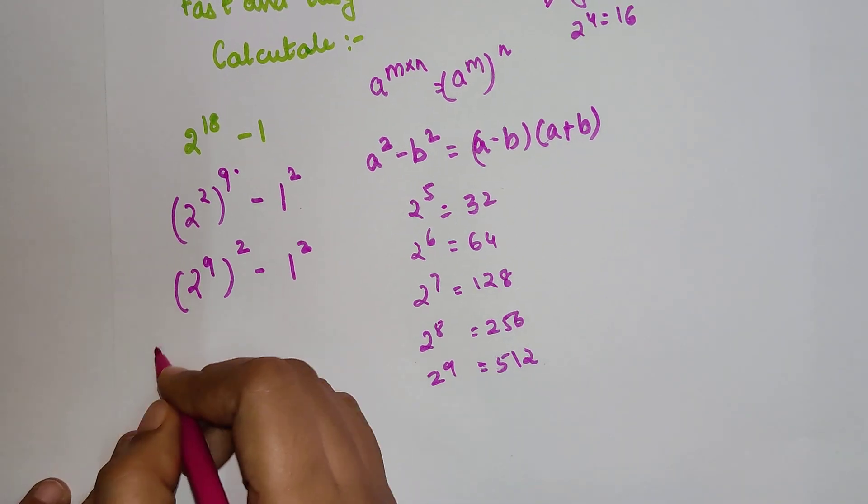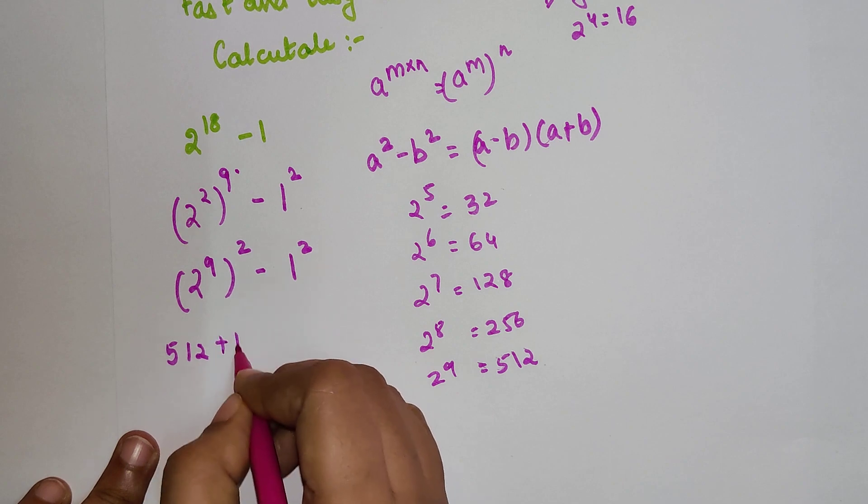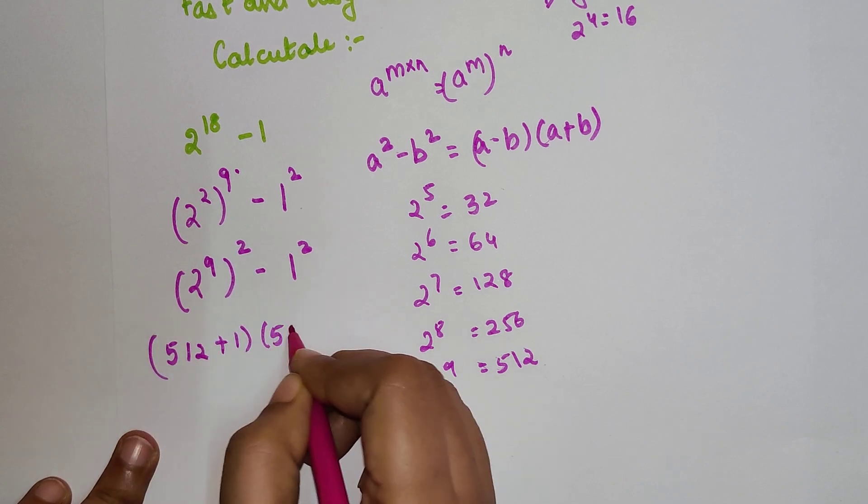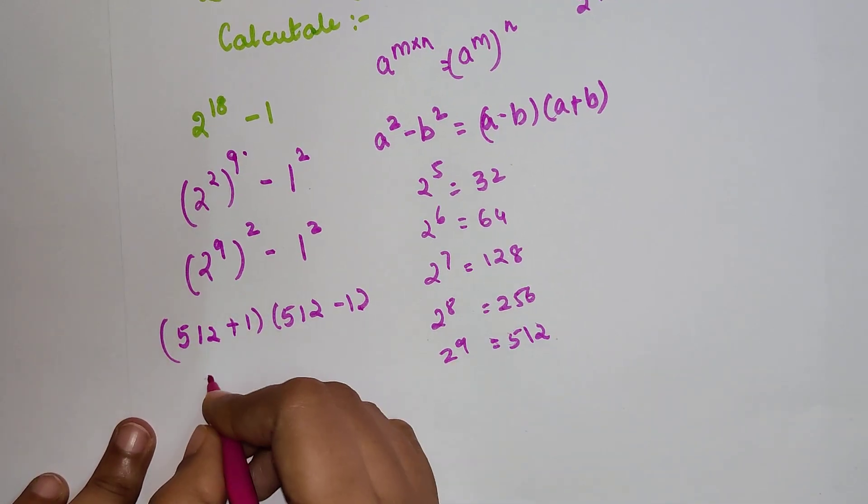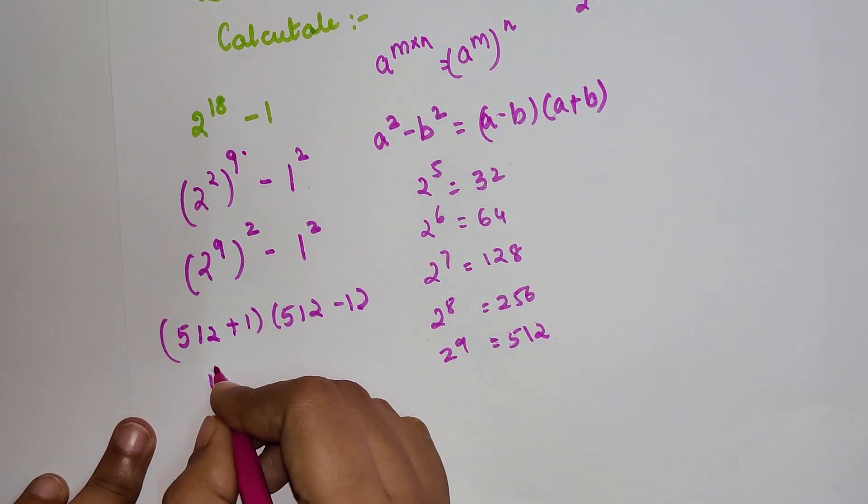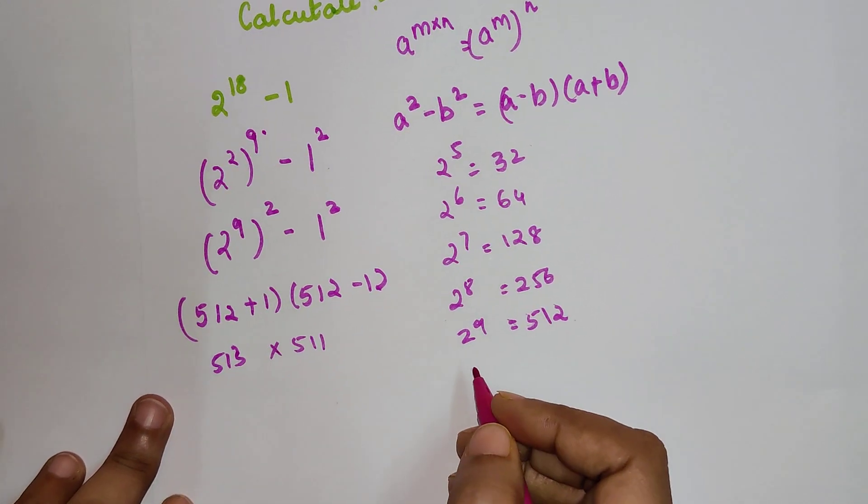So now this can be written as 512+1 times 512-1. So now this is 513 × 511. Correct.